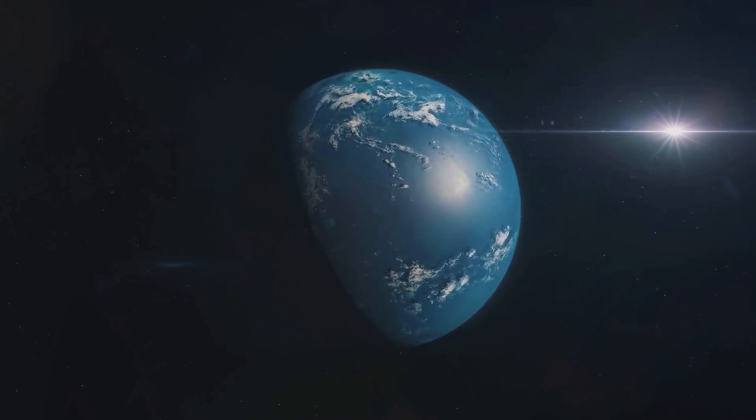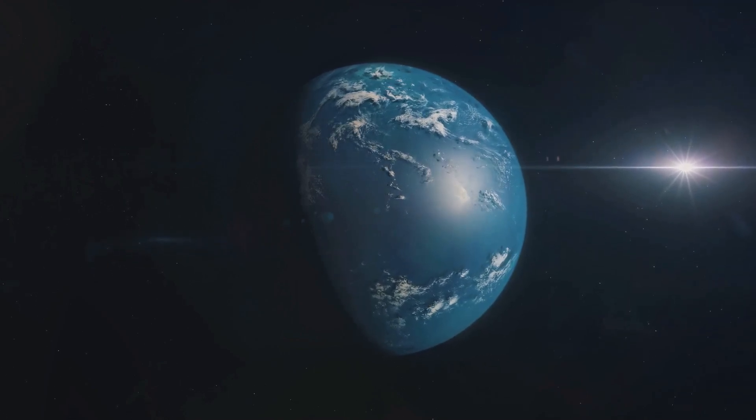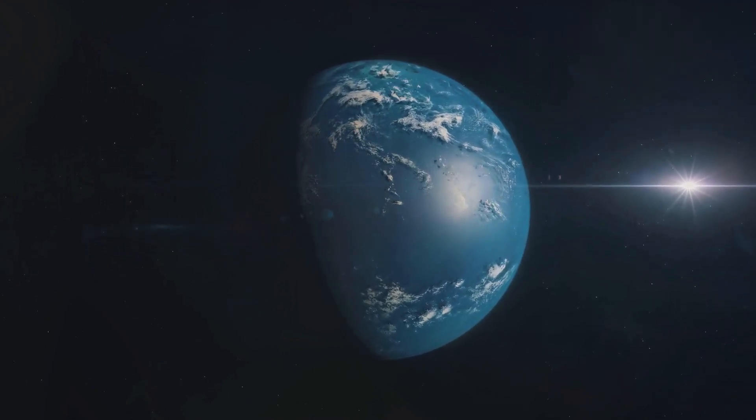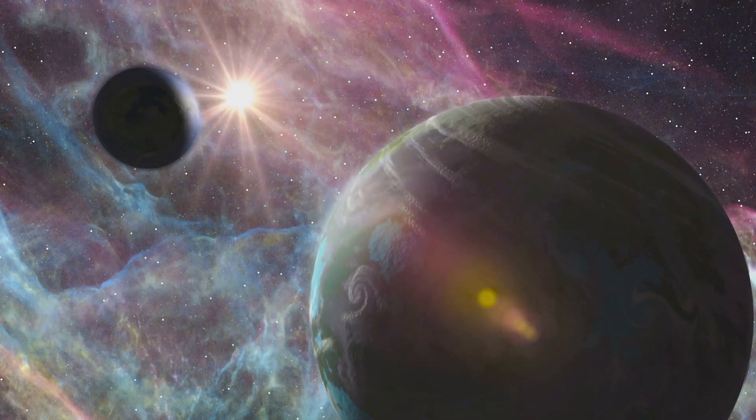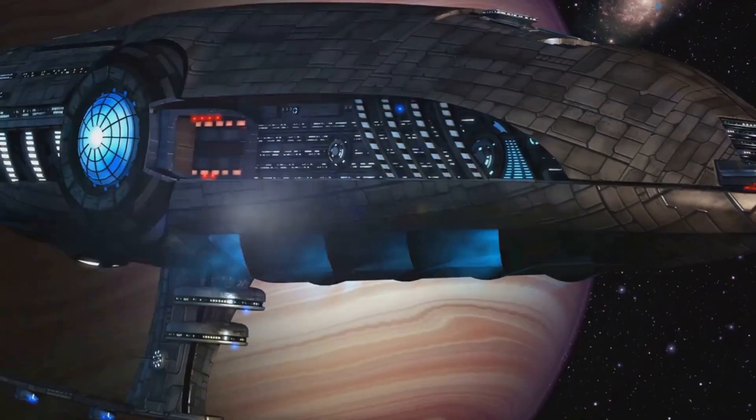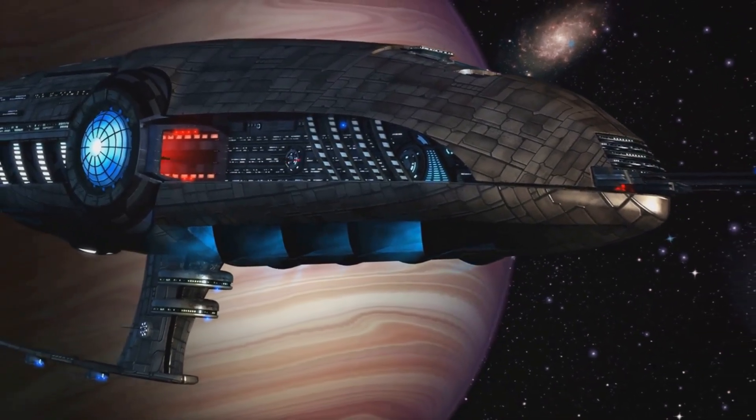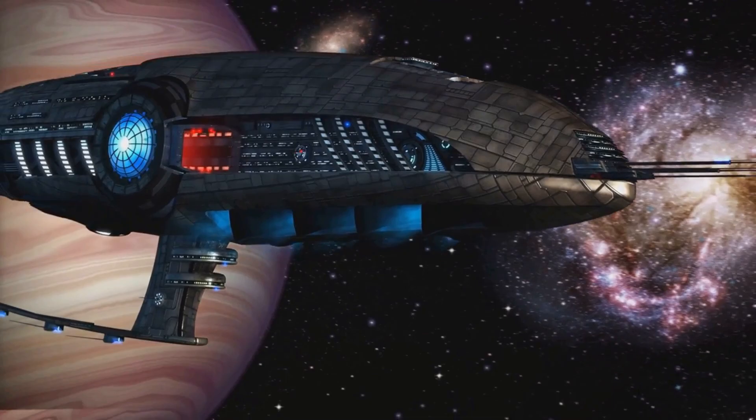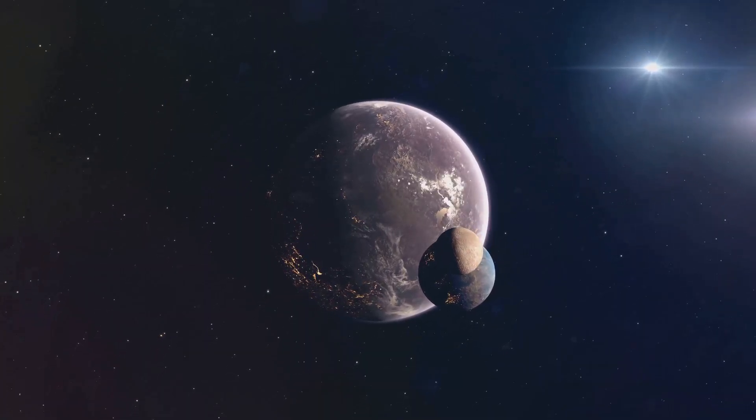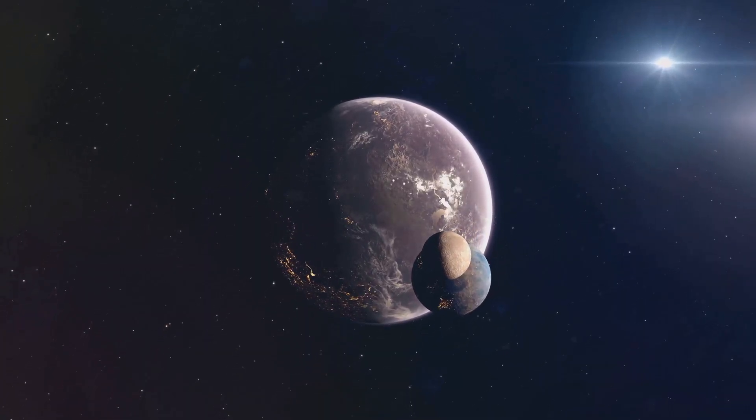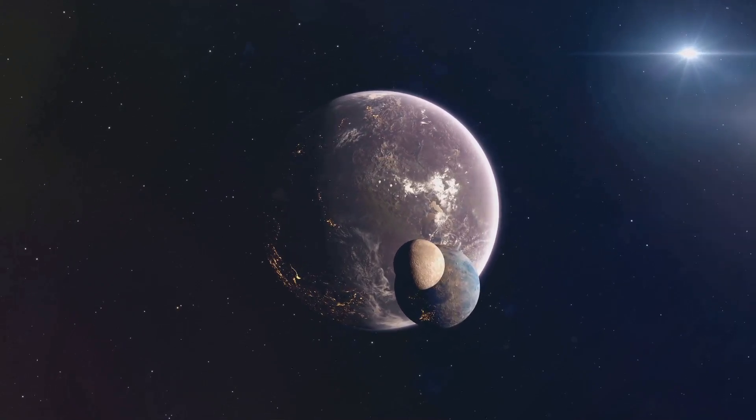This is significant because Earth-sized exoplanets are considered the most likely candidates for hosting life as we know it. The conditions on these planets may be just right for liquid water to exist, a crucial ingredient for life. But there's more to the story. The telescope's observations suggest that LHS 475 b may have a rocky surface and a warmer temperature compared to Earth. Researchers are now using the telescope to analyze the planet's atmosphere and the potential presence of clouds, which could provide further clues about the planet's potential habitability.